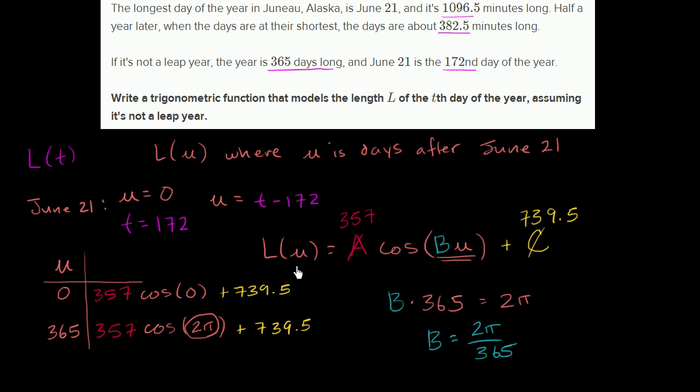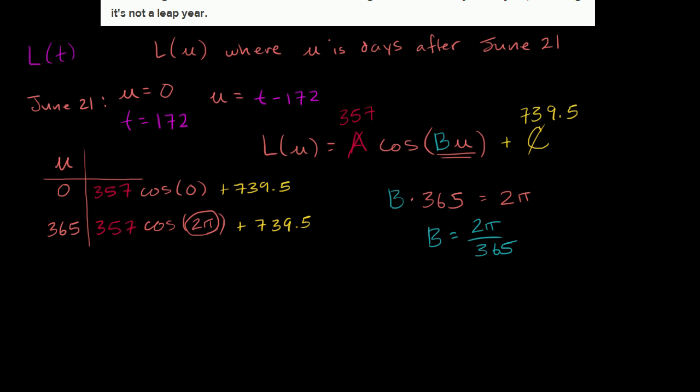And we are almost done. We figured out what A, B, and C are. Now we just have to substitute U with T minus 172 to get our function of T. So let's just do that. We deserve a little bit of a drum roll now.